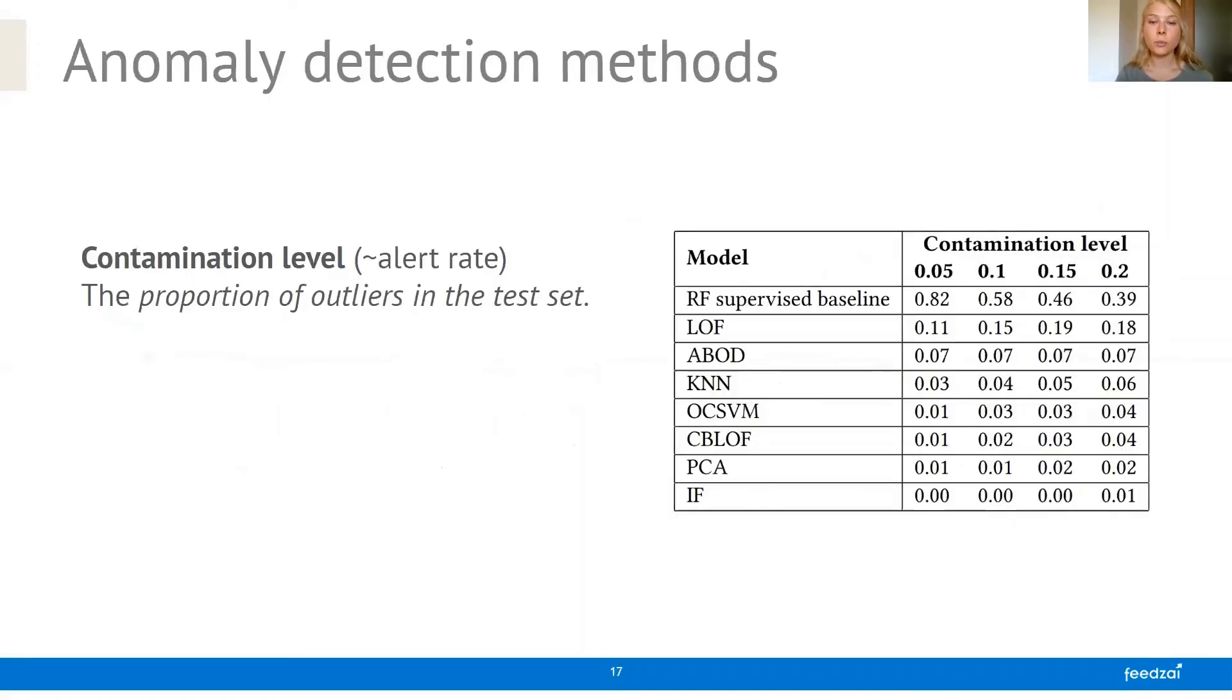So we benchmarked seven anomaly detection methods that basically aim at finding unexpected behavior in the data using the same train test split that we also used for the supervised baseline for better comparison. And then we are comparing all these methods by contamination levels. This is because all these methods return different scores and metrics and we wanted to have it comparable. And the contamination level indicates the proportion of outliers that we expect in the test set and is set as a threshold on the decision function.